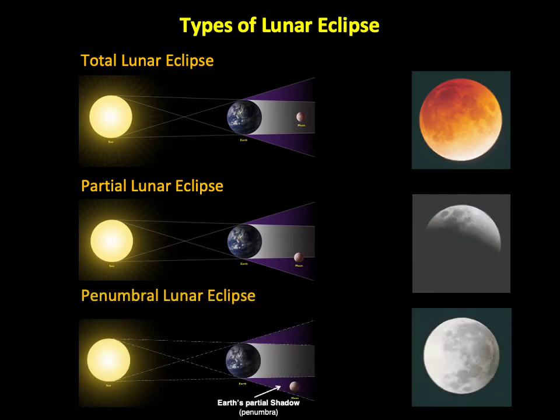The third type of lunar eclipse, called a penumbral lunar eclipse, occurs when the Moon is only within Earth's partial shadow, or penumbra. The darkening of the Moon during a penumbral eclipse is barely noticeable to the eye.